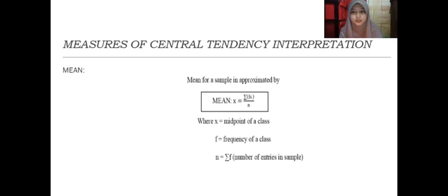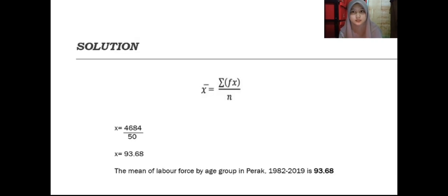To measure the central tendency, we have to find the mean, median, and mode. First, to find the mean, the formula is X̄ equals sum of Fx divided by N. So, X̄ equals 4684 divided by 50.